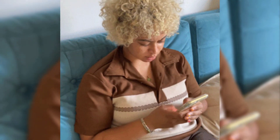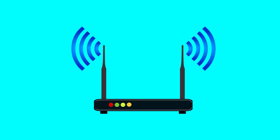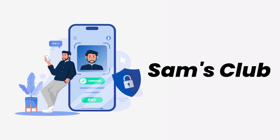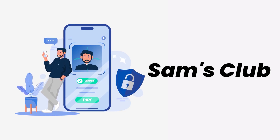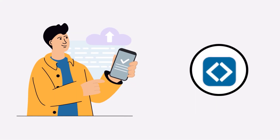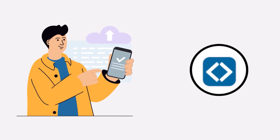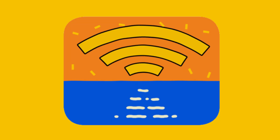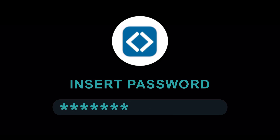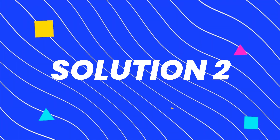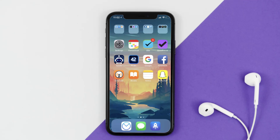It might be possible that you're not able to log in due to a connectivity issue, so first make sure you have a strong and stable internet connection. Do a quick test by opening an app that runs on internet other than the Sam's Club app and check if it's working. You can also try switching from Wi-Fi to mobile data and vice versa — doing this might help you log in.